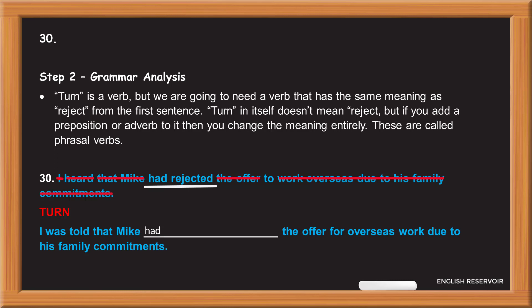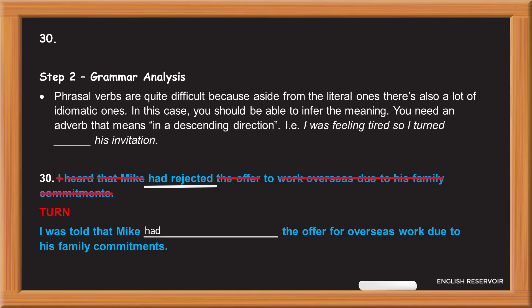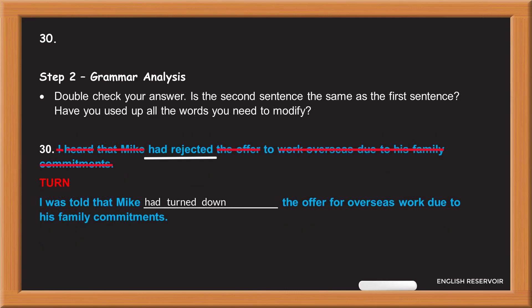'Turn' is a verb, but we need a verb that has the same meaning as 'reject' from the first sentence. 'Turn' in itself doesn't mean 'reject', but if you add a preposition or adverb to it, you can change the meaning entirely — these are called phrasal verbs. Phrasal verbs are quite difficult because aside from the literal ones, there are a lot of idiomatic ones. In this case you should be able to infer the meaning. You need an adverb that means 'in a descending direction' — e.g., 'I was feeling tired so I turned __ his invitation.' Double check your answer: is the second sentence the same as the first? Have you used all the words you need to modify?